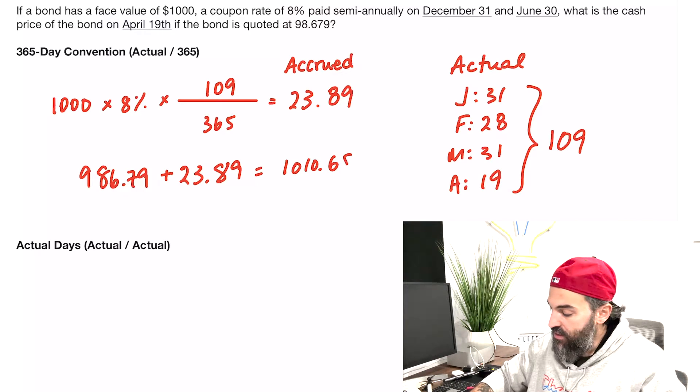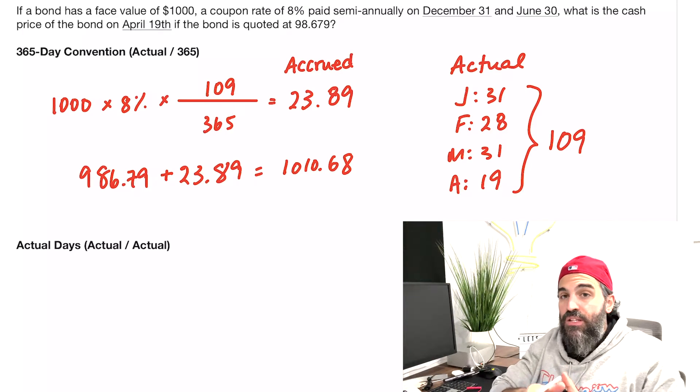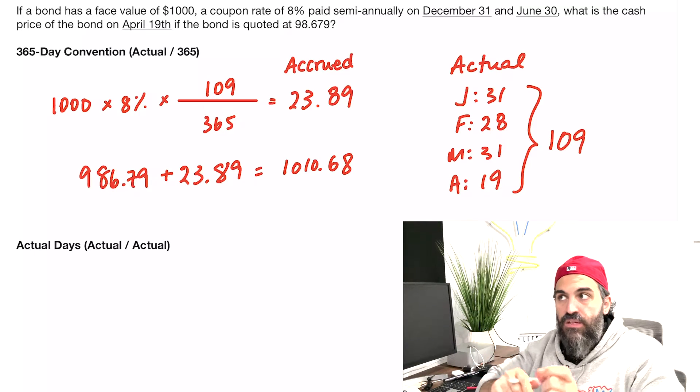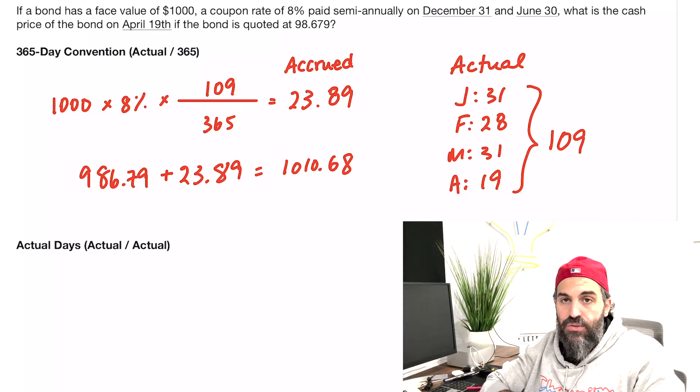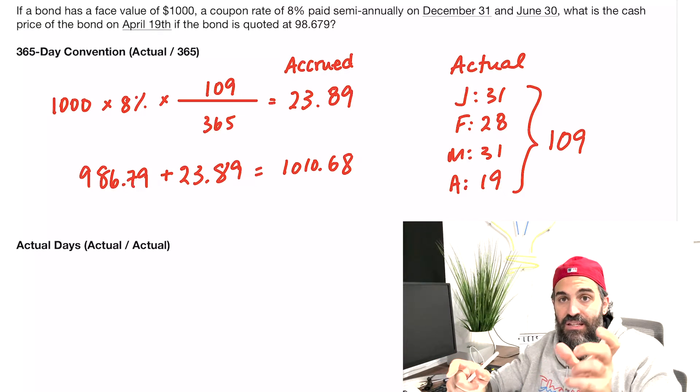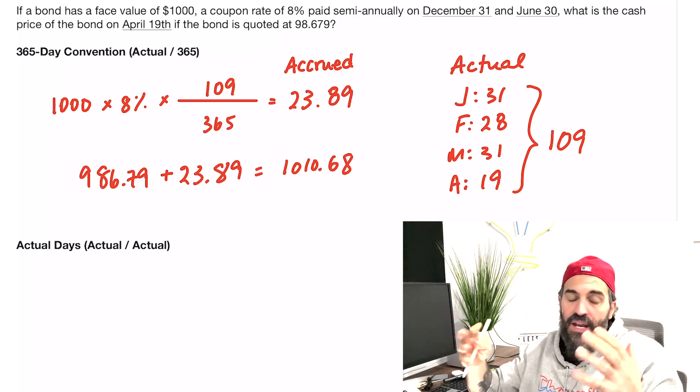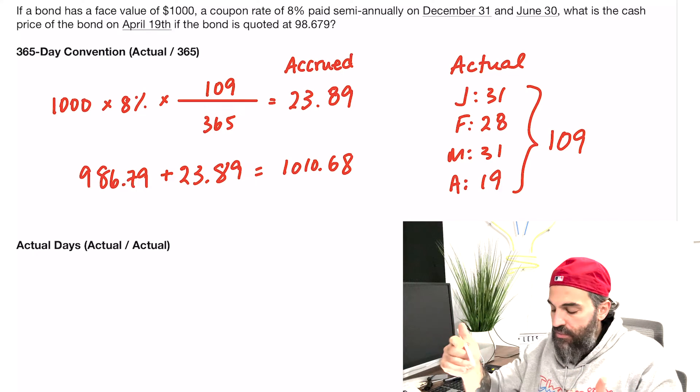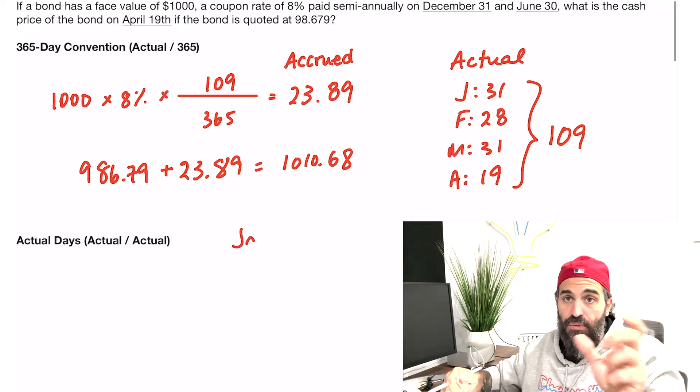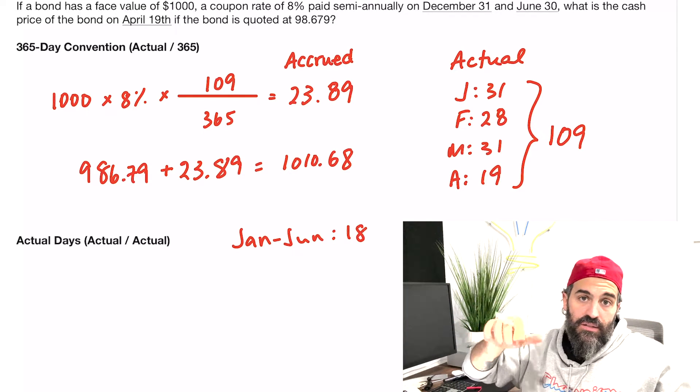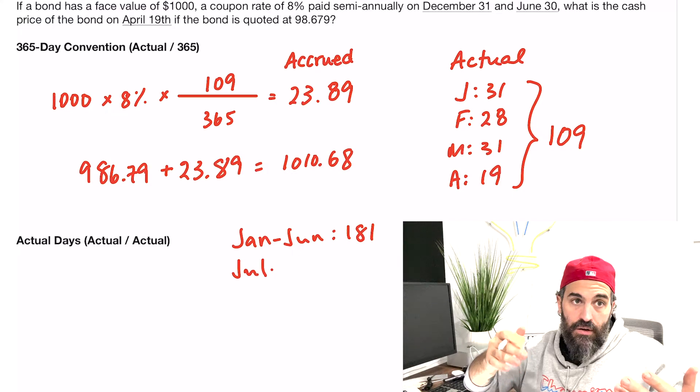If you wanted to use the actual method or actual over actual, this would give you the exact accrued interest. The main difference is that one uses 365, whereas the other actually looks at the fact that every month doesn't have the same number of days. The first half of the year between January and June has 181 days; the second half between July and December has 184 days.